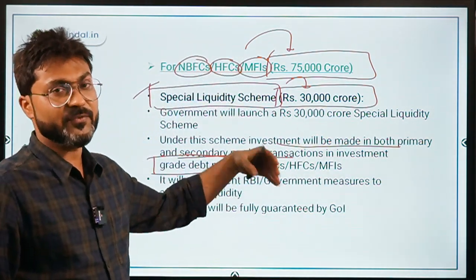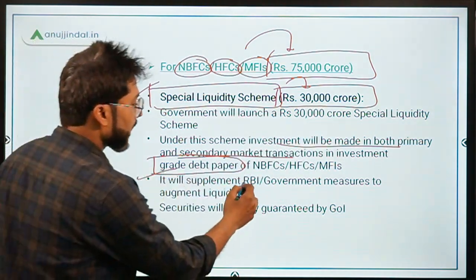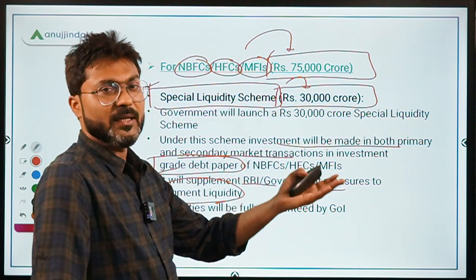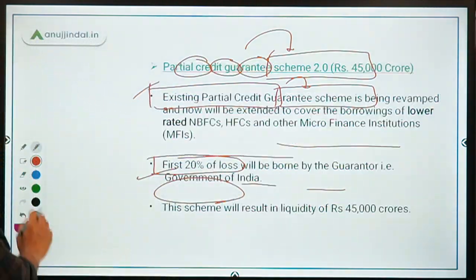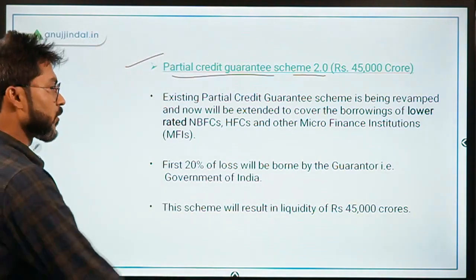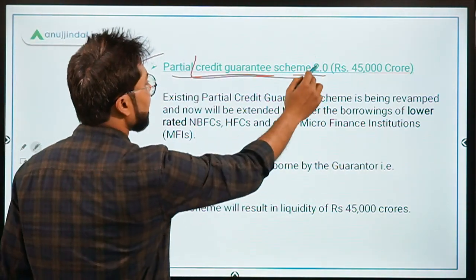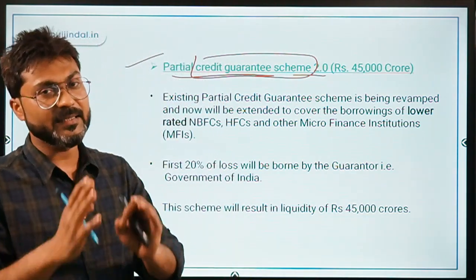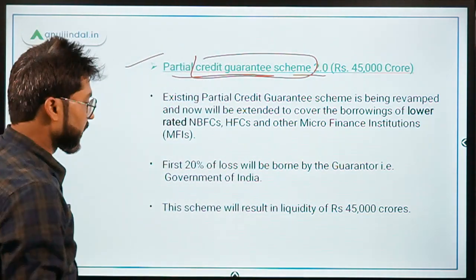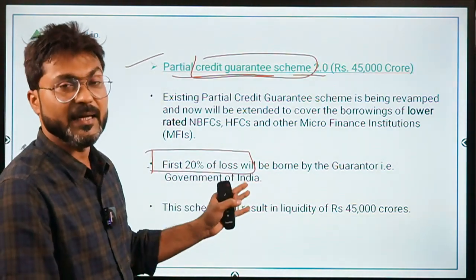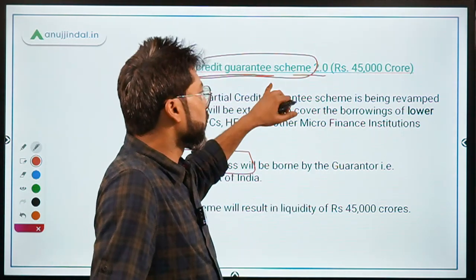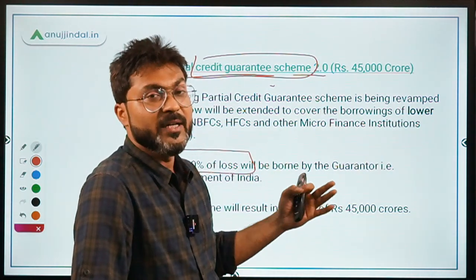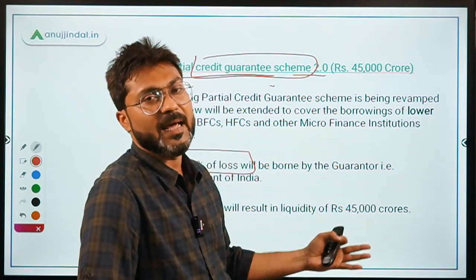The remaining ₹45,000 crore was for the Partial Credit Guarantee Scheme 2.0. Under this scheme, for any credit given to HFCs, MFIs, or NBFCs, the government acts as guarantor and bears the first 20% of any loss. This will supplement RBI and government measures to augment liquidity in the market.